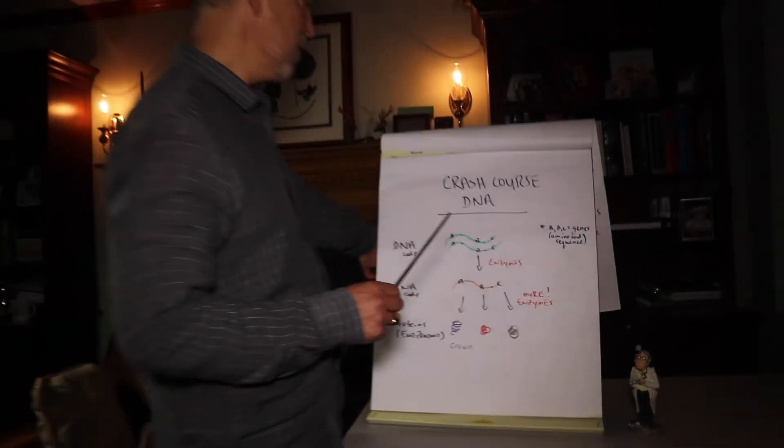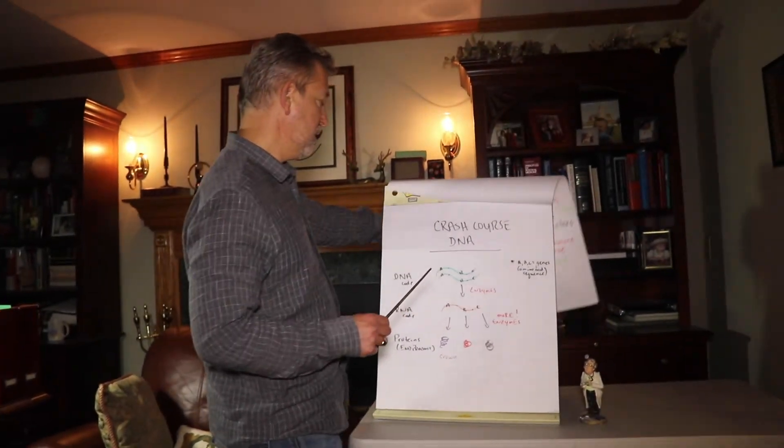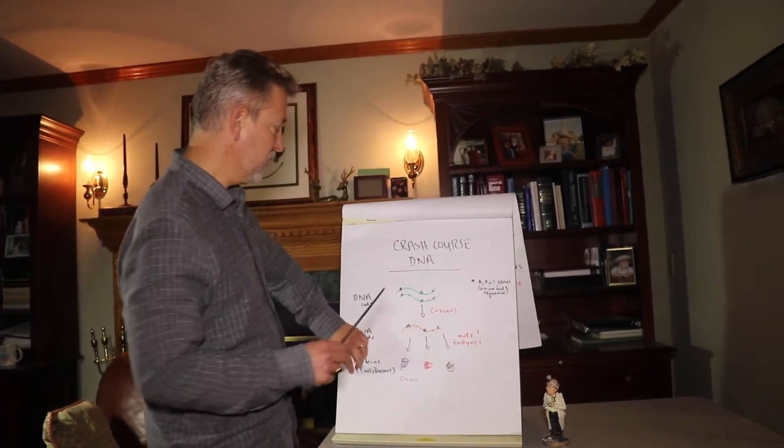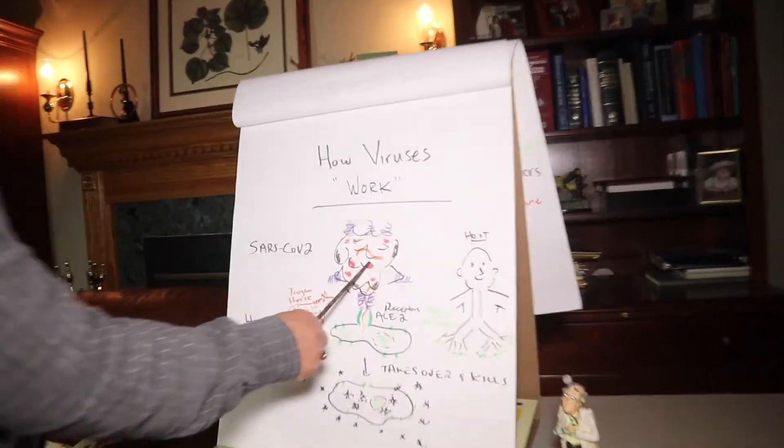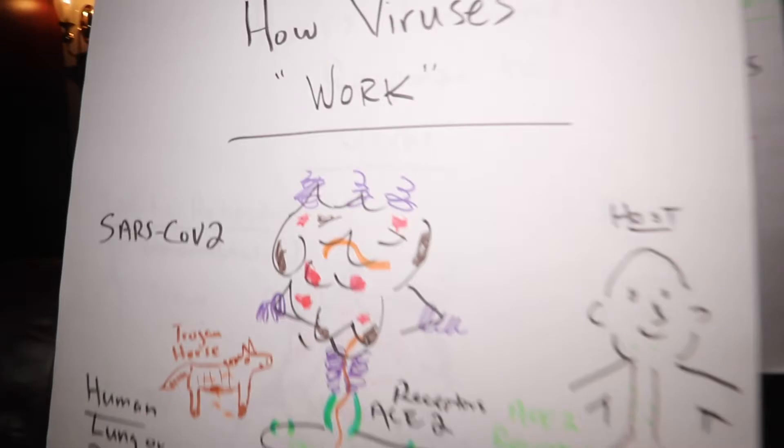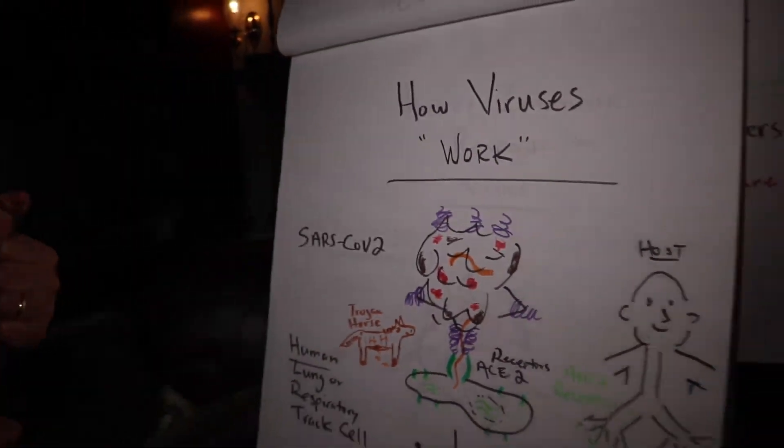So, if we look back at the DNA, you'll realize that in this virus, here is the RNA. There's that piece, that code. So, how does the virus work? What does it do?